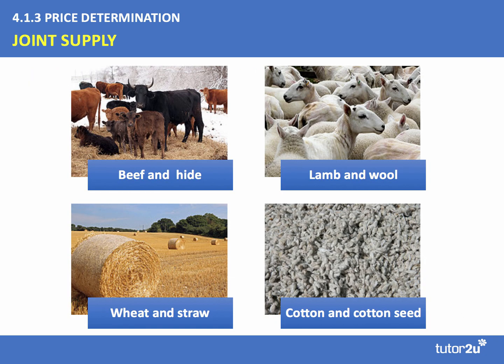Let's move on to our second concept: joint supply. Joint supply is where an increase or a decrease in the supply of one product leads to an increase or decrease in the supply of a byproduct. Associate joint supply with the byproduct effect — for example, an expansion in beef production will ordinarily lead to a rising market supply of beef hide.